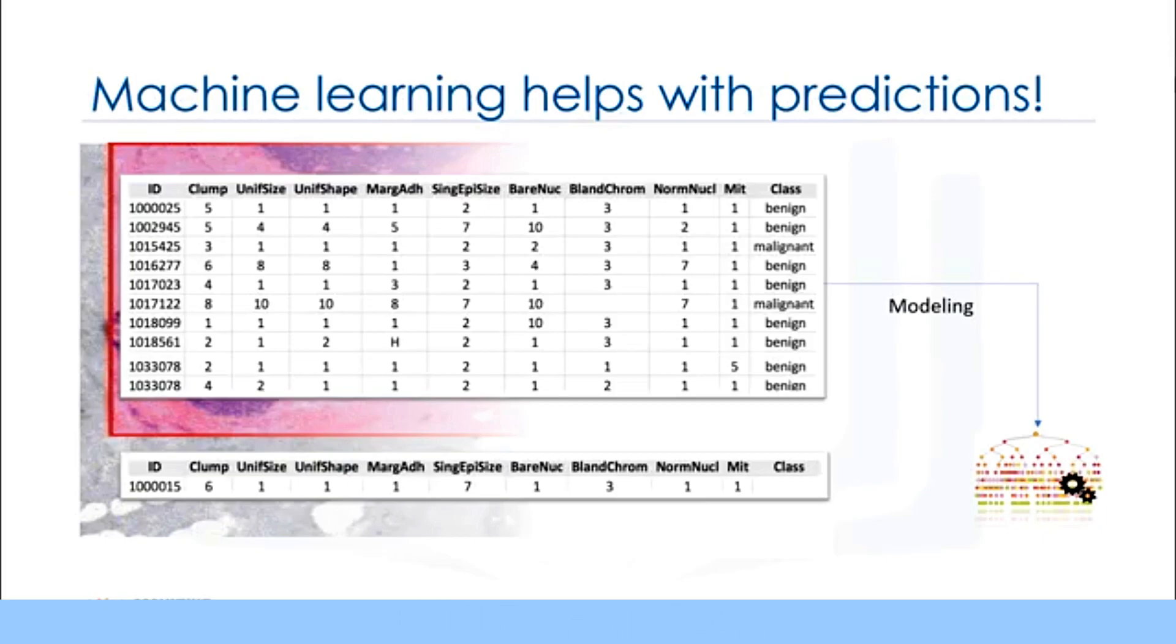You should clean your data, select a proper algorithm for building a prediction model, and train your model to understand patterns of benign or malignant cells within the data. Once the model has been trained by going through data iteratively, it can be used to predict your new or unknown cell with rather high accuracy. This is machine learning.